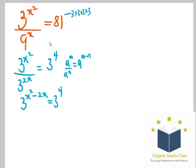Since the bases are equivalent, we can equate the powers, so we have x squared minus 2x equals 4. Therefore, x squared minus 2x minus 4 equals 0.